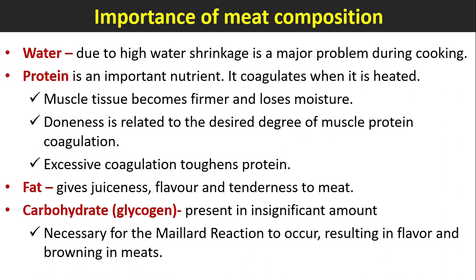The importance of meat composition: Water — due to high water content, shrinkage is a major problem during cooking. Protein is an important nutrient; it coagulates when heated, making muscle tissue firmer and causing loss of moisture. Doneness is related to the desired degree of muscle protein coagulation.